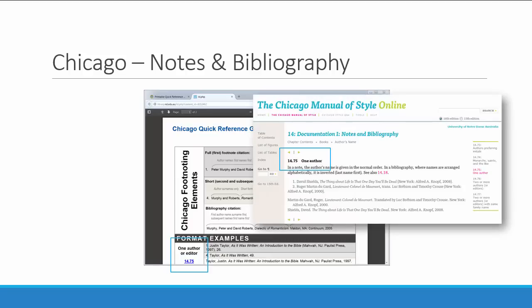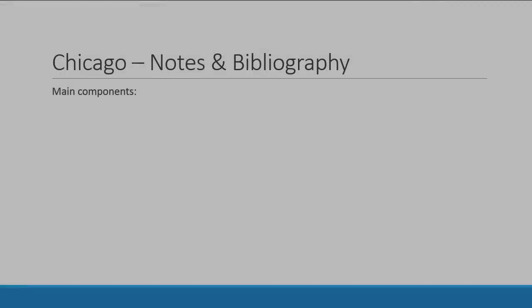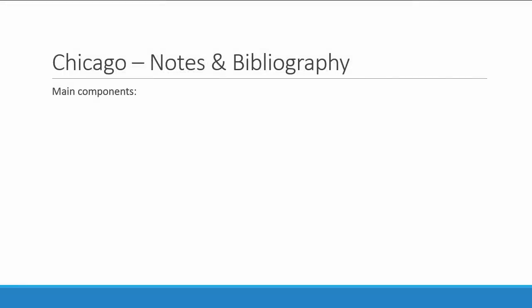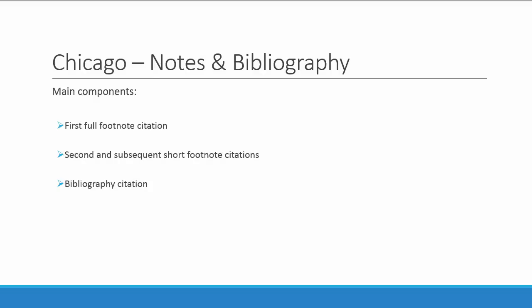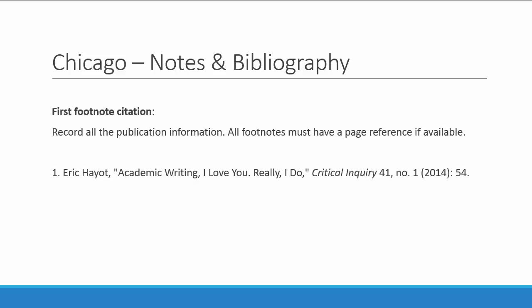Now let's take a look at the elements of a Chicago citation. The main components of Chicago notes and bibliography style are the first full footnote citation, the second and subsequent short footnote citations, and the bibliography citation. The first footnote citation needs to contain the full publication information of the resource, and you need to be sure to include the page number.